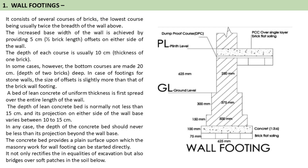Starting with wall footings — it consists of several courses of bricks, the lowest course being usually twice the breadth of the wall above. The increased base width is achieved by half brick length offsets on either side of the wall. The depth of the course is usually 10 centimeters. In case of footings for stone walls, the size of the offset is slightly more than that of the brick wall footing. A bed of lean concrete of uniform thickness is first spread over the entire length of wall. The depth of lean concrete bed is normally not less than 15 centimeters, and on either side of the wall base it is up to 10 to 15 centimeters. The depth of the concrete bed should never be less than its projection beyond the wall of the base.